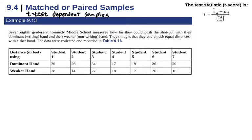Both sets are linked together as matched pairs in a t-distribution, also called dependent samples. Here's an example: seven eighth graders at Kennedy Middle School measured how far they could push the shot put with their dominant writing hand and then their weaker non-writing hand. They thought they could push equal distances with either hand. These scores are dependent because it's the same student — a lot of times for dependent data it is the same subject, or a before-and-after case.